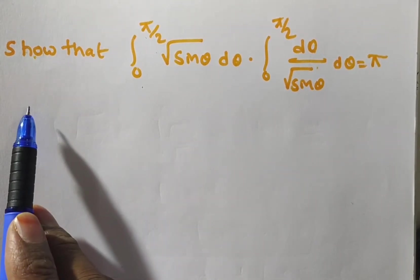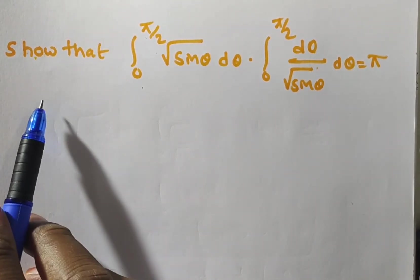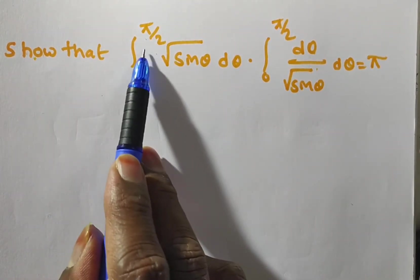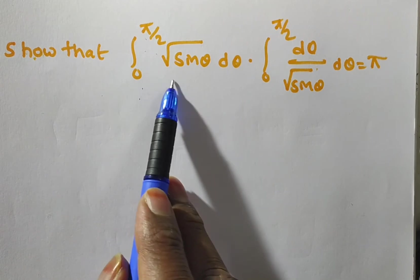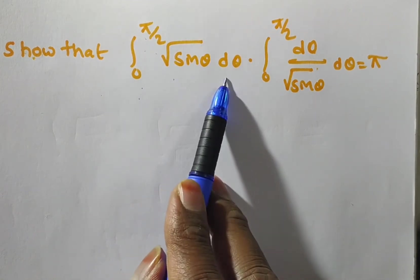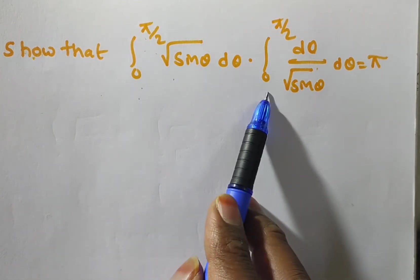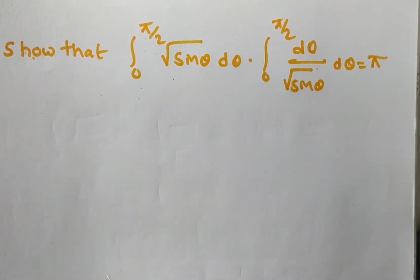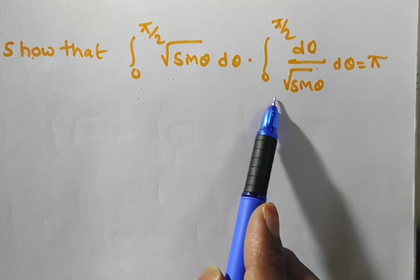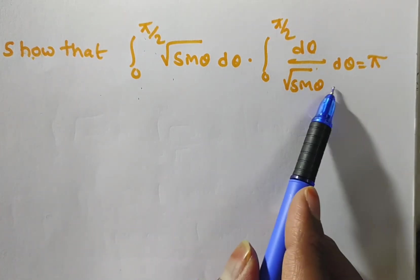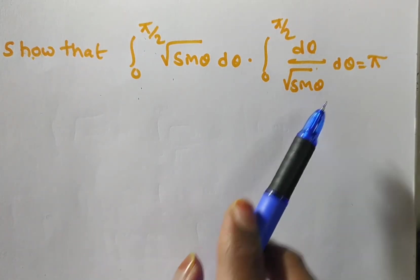Friends, the given problem is: show that the integral from 0 to π/2 of √(sin θ) dθ multiplied by the integral from 0 to π/2 of 1/√(sin θ) dθ equals π.